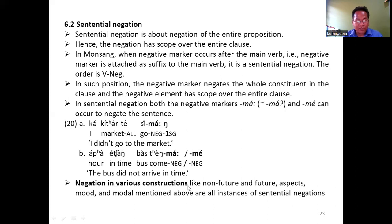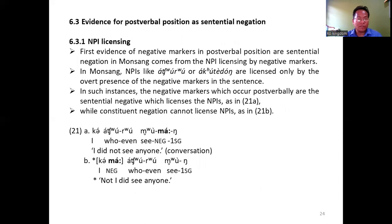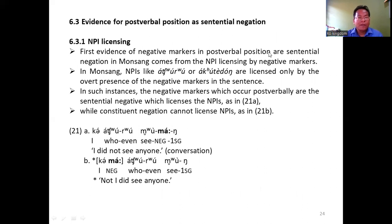Negation in various constructions given in the previous slides — like negation of non-future, future, aspect, mood, and modal — are all instances of sentential negation in Monsang. Now I will provide evidence to establish the post-verbal position as sentential negation. The first evidence comes from NPI licensing by negative markers.